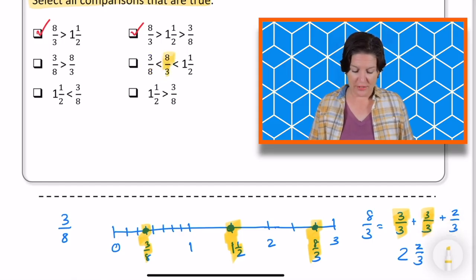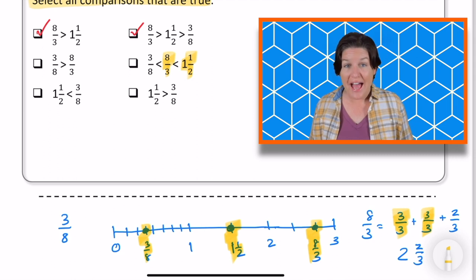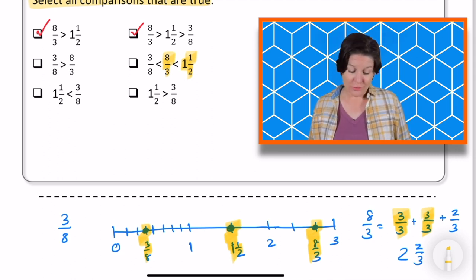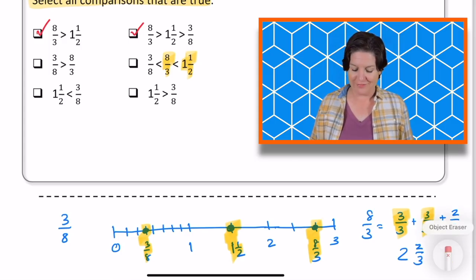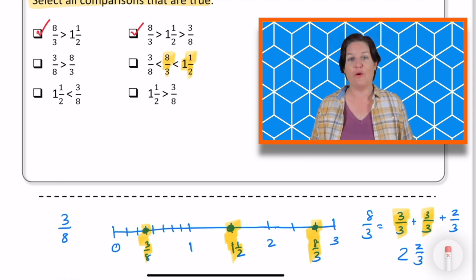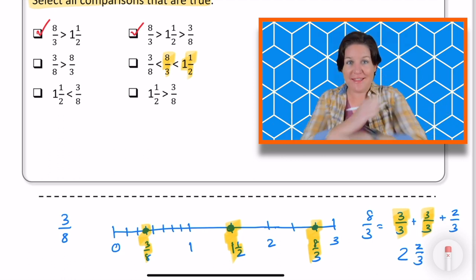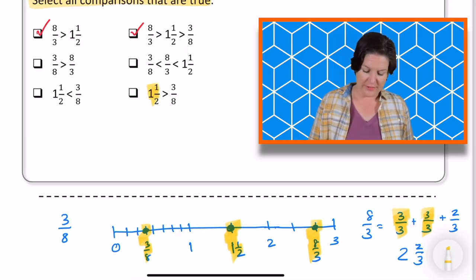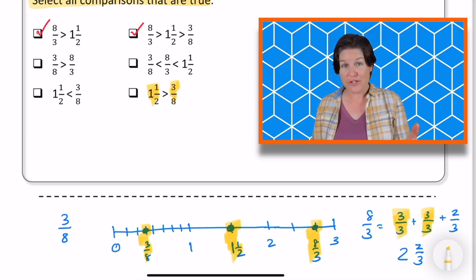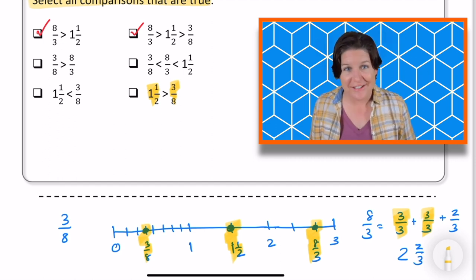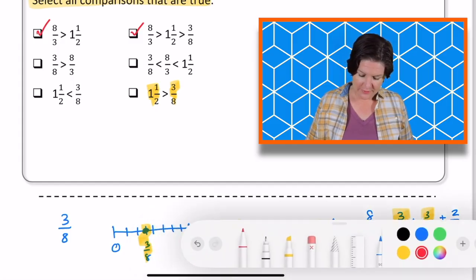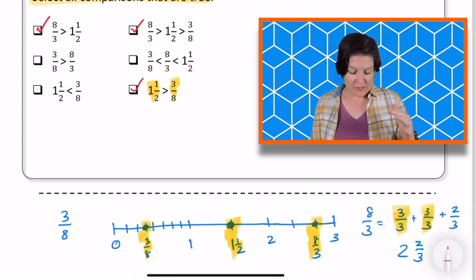Alright, now is 8 3rds less than 1 1⁄2? Is that true? No, that one is not true because 8 3rds over here is greater than 1 1⁄2, not less than. So we can go ahead and eliminate that one. Alright, and our final one says that 1 1⁄2 is greater than 3 8ths. Is that true? It is true. So we can go ahead and keep that one. Let's mark it. So we've got three answer choices for this one.